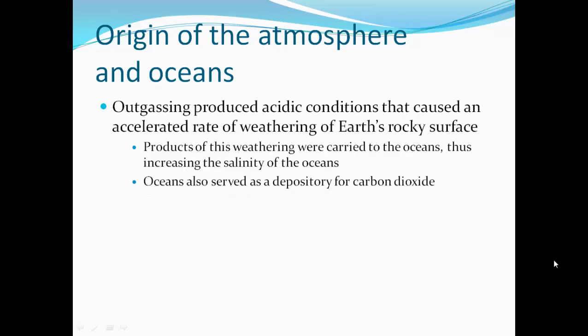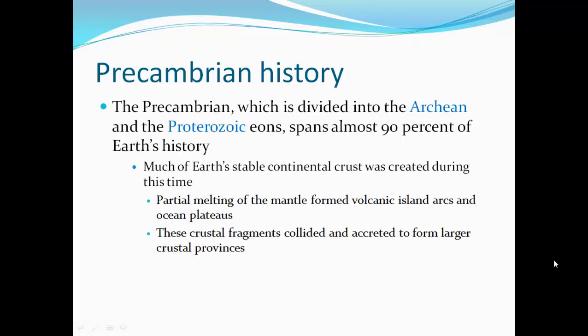Outgassing produced acidic conditions that caused an accelerated rate of weathering of Earth's rocky surface. The products of this weathering were carried to the oceans, increasing the salinity of the oceans — making them saltier. The oceans also served as a depository for carbon dioxide, acting as a carbon dioxide sink.